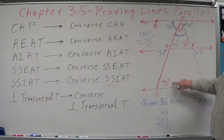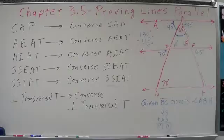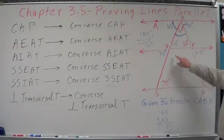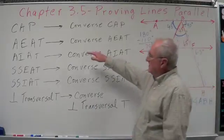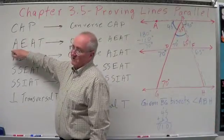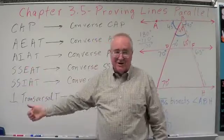Look at this angle and this angle. What's the relationship between these two angles? They're cut by a transversal — alternate interior angles. What do we know about alternate interior angles that are congruent? The lines have to be parallel for them to be congruent. What's the relationship between this angle and this one? They're corresponding angles. If corresponding angles are congruent, what does that mean about the lines that create them? They have to be parallel.